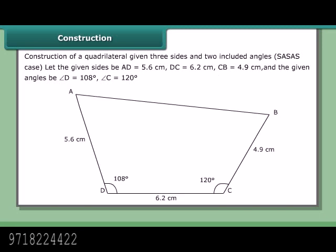Construction of a quadrilateral given three sides and two included angles — the SASAS case. Let the given sides be AD = 5.6 cm, DC = 6.2 cm, CB = 4.9 cm, and the given angles be angle D = 108° and angle C = 120°.